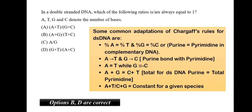In a double stranded DNA, which of the following ratios is always equal to 1? A, T, G, C denote the number of bases. We know that when we talk about the double stranded DNA, the first thing which comes into our mind is Chargaff's rule. What does Chargaff's rule state? It states the percent of adenine will be always equal to the percent of thymine. The percent of guanosine will be always equal to the percent of cytosine.